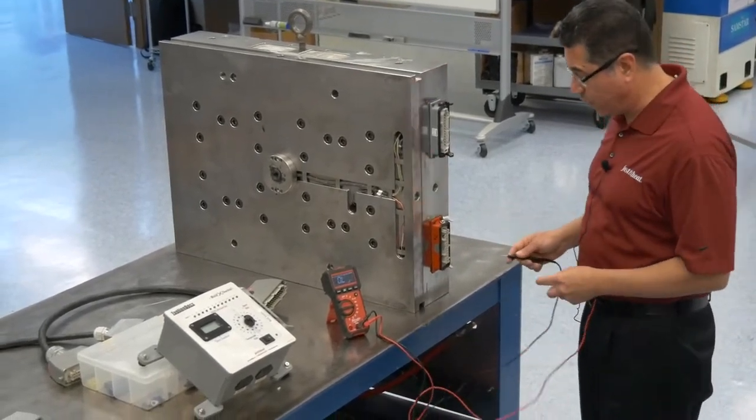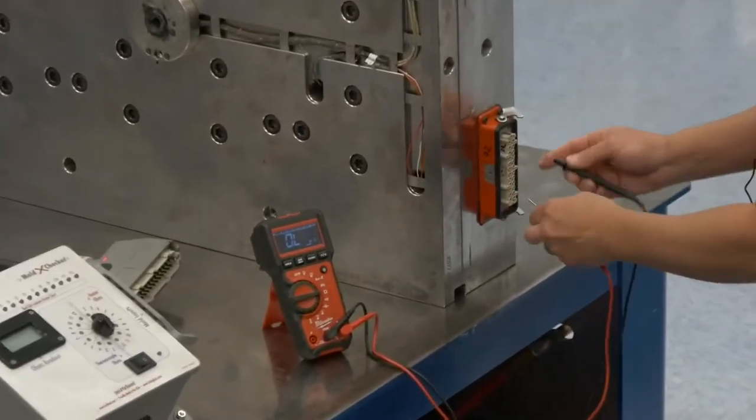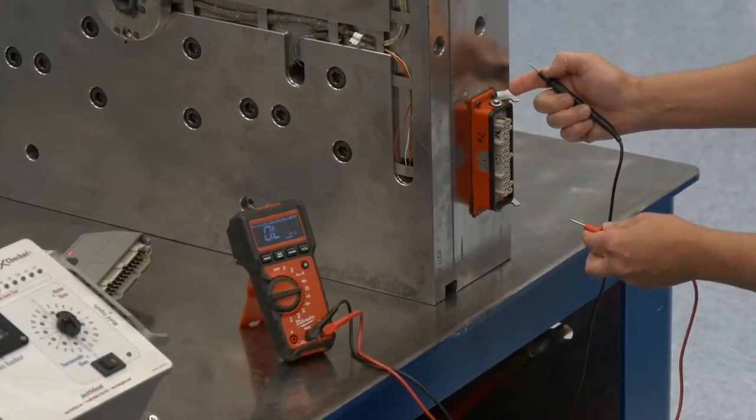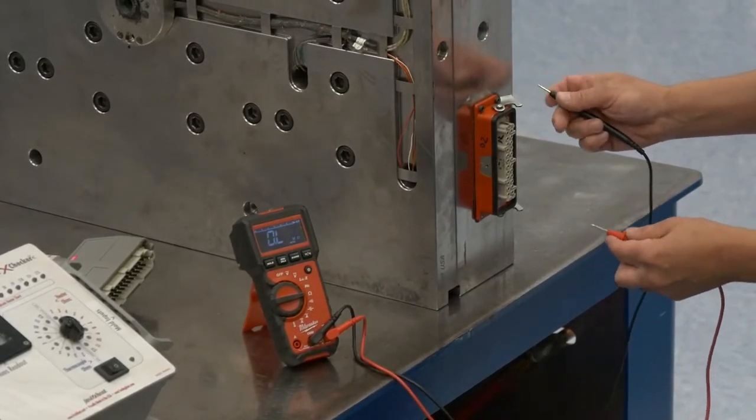Then I have to do the same thing for each of the thermocouples. So on a grounded thermocouple, I cannot check it across from the body of the hot half because it's grounded. It's going to make a contact each time.